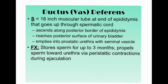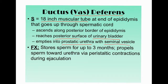Following the epididymis is the vas deferens — roughly an 18-inch muscular tube that goes from the epididymis through the spermatic cord. It ascends along the posterior border of the epididymis, reaches the posterior surface of the urinary bladder, and dumps its product into the prostatic urethra, where the seminal vesicles also release their product.